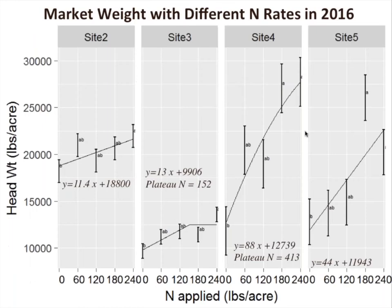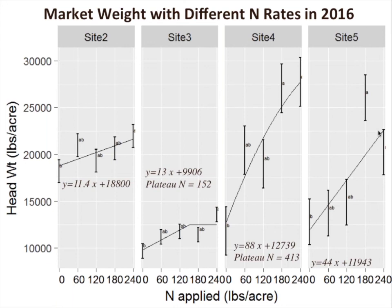Looking at market weight in 2016, there's quite a different reaction to nitrogen across sites. In a fertilizer study like this, one method is to fit a linear-to-plateau or quadratic-to-plateau model. Two of the sites fit those models; two sites were strictly linear, indicating we needed to look further out in terms of nitrogen application. The larger the slope in the linear part, the more valuable additional nitrogen would be — and potentially that could be related to the nitrogen mineralization potential of the soil.